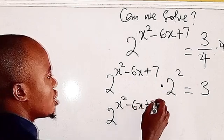Since log base two of two equals one, we have (s minus three) squared equals log base two of three. Taking the square root of both sides gives s minus three equals plus or minus the square root of log base two of three. Therefore, s equals three plus or minus the square root of log base two of three, and that is the solution to the problem.